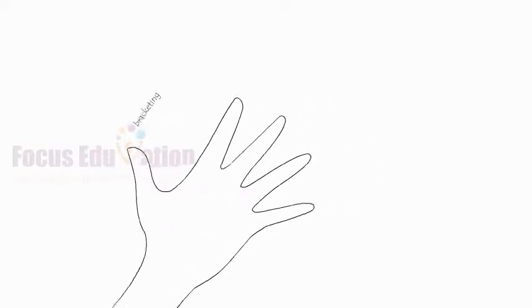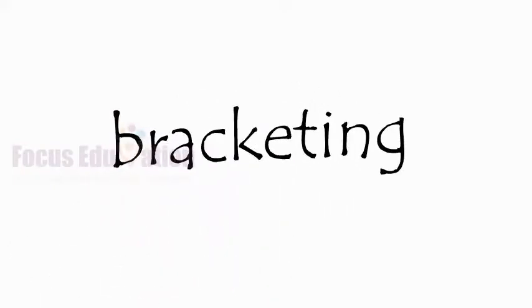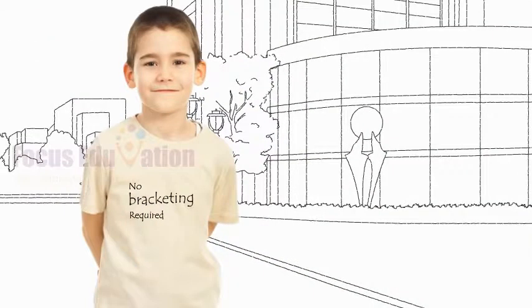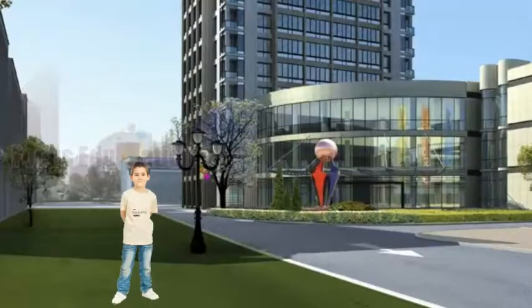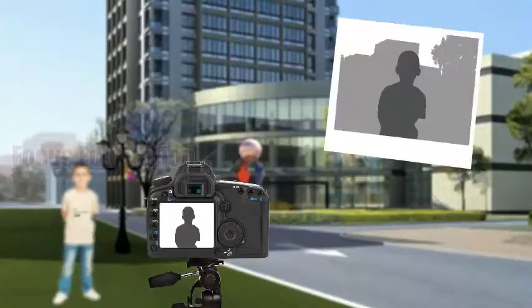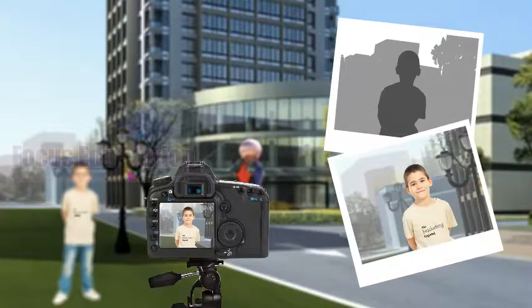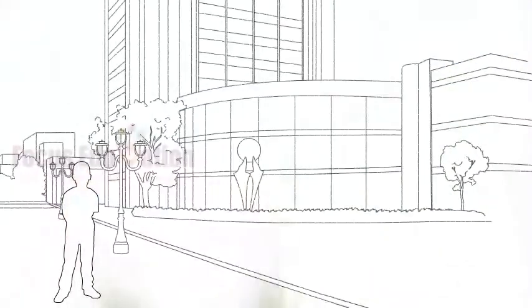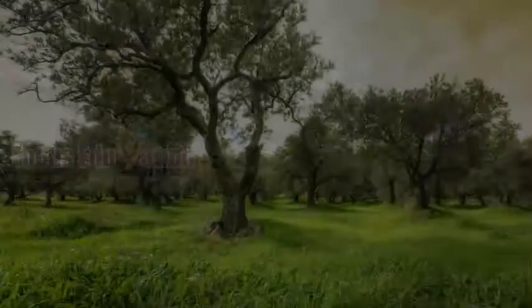The first one is bracketing. Digital SLRs do such a good job of capturing the correct exposure that you might think you don't need to bracket. But you'll find that bracketing can give you several different looks for the same picture, such as a silhouette or a high-key version. Bracketing is also a valuable tool if you want to explore high dynamic range or HDR photography.